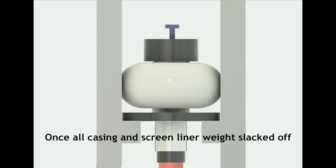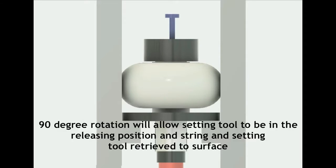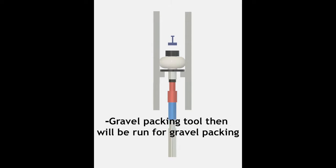Once all casing and screen liner weight slacked off, 90 degree rotation will allow setting tool to be in the releasing position and string and setting tool retrieved to surface. Gravel packing tool then will be run for gravel packing.